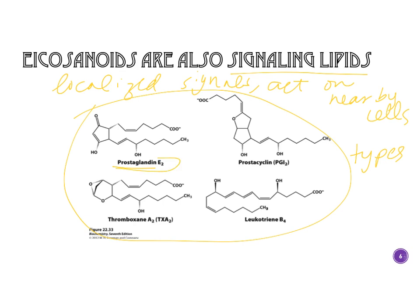There are many types of eicosanoids: prostaglandins, thromboxanes, and leukotrienes. You don't need to memorize all of them, but I'd like you to recognize the structure of prostaglandin — I remember it because it looks like a frog with really long legs. You don't need to draw it, just recognize it. These are all lipids because they are mostly nonpolar with just a few polar end groups.